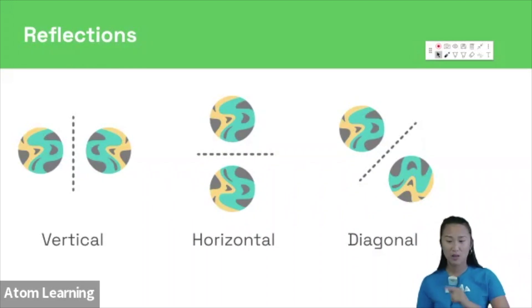Mirror lines can be either vertical, so straight up and down, horizontal—think about the word horizon if you struggle to remember that one—or mirror lines can be diagonal.